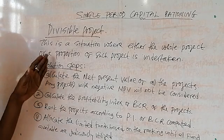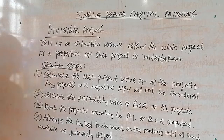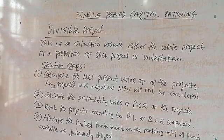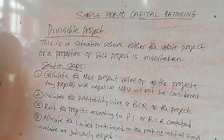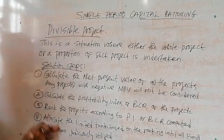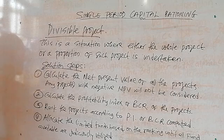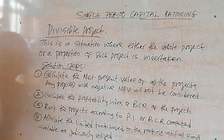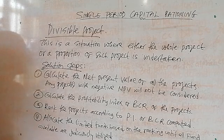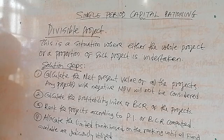So these are the solution steps you need to follow when dealing with a divisible project under capital rationing. In the next video, we will be looking at mutually exclusive projects and other scenarios under single period capital rationing. If you have not subscribed to the YouTube channel, click on the subscribe button, give the video a thumbs up, like the video, and add your comments — I will be glad to respond. Thank you and God bless.